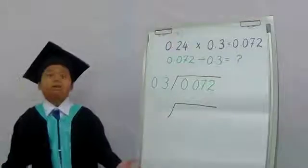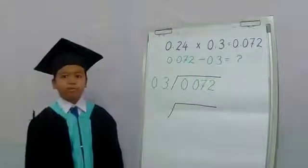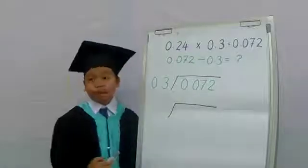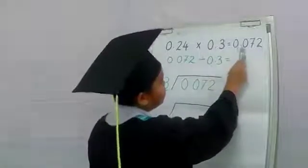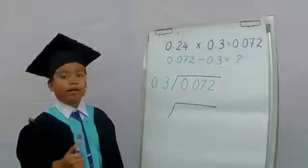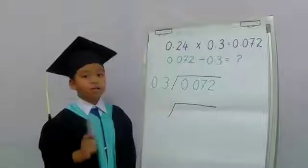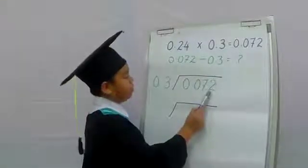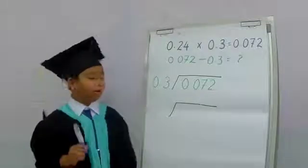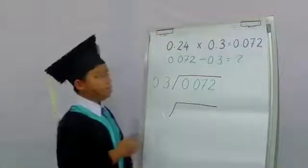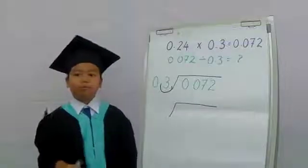Now with my power, I'm going to show you how to solve division of decimal numbers. Let me show you how to check the answer using the division method. To check whether 0.24 times 0.3 equals 0.072, I'm going to divide 0.072 by 0.3 using long division. First, we have to make sure the divisor becomes a whole number. So we move the decimal point one place to the right — so instead of 0.3, it becomes 3.